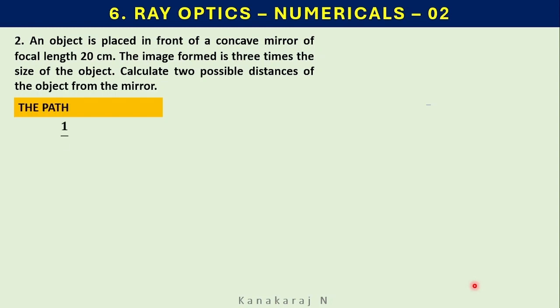The path. There are two formulas in mirror: the mirror formula 1/v plus 1/u equals 1/f, and the magnification formula m equals h2/h1 equals minus v/u.